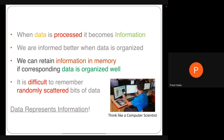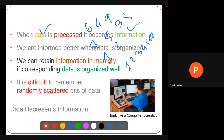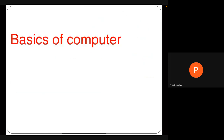When data is processed, it becomes information. We can also retain information better in memory when data is organized well. For instance, the number sequence 9, 4, 9, 5, 3, 2, 1, 7, 6 is hard to remember, but 1, 2, 3, 4, 5, 6, 7, 8, 9 is easy. It is always easier to remember organized data rather than scattered or random data.